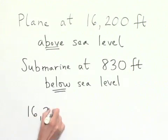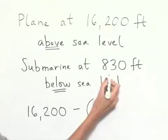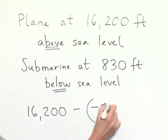To find the difference, we take 16,200 and we're going to subtract from that our value of negative 830.